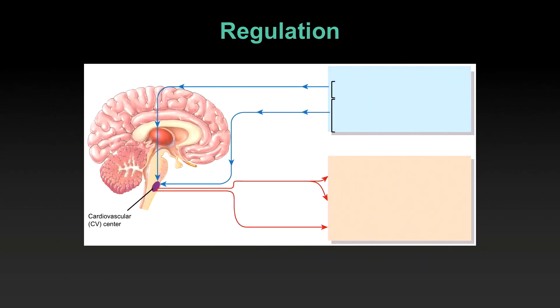So how and why would these ever be regulated? All changes at the level of the heart originate in the cardiovascular center — a few nuclei in the medulla oblongata. This area gets information about pressure in the arteries, heart rate, and the amount of blood being circulated, and can regulate heart rate and stroke volume accordingly. The cardiovascular center is what controls cardiac output.